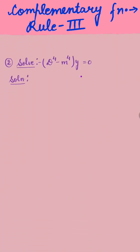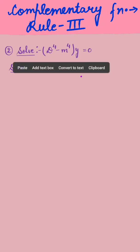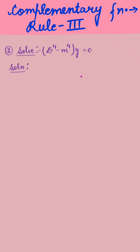Next question: solve (D⁴ - m⁴)y = 0. This is already in symbolic form, so we directly write the auxiliary equation: D⁴ - m⁴ = 0.